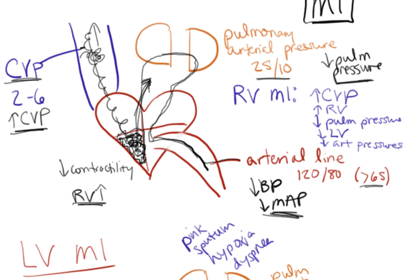If we look back at our right ventricular MI, the obstruction was in our right ventricle, so all the numbers preceding that were high — our CVP was high, our right ventricular pressure was high. Everything after the obstruction in your right ventricle is low: your pulmonary pressure is low, your left ventricular pressure is low, and your arterial pressure is low.